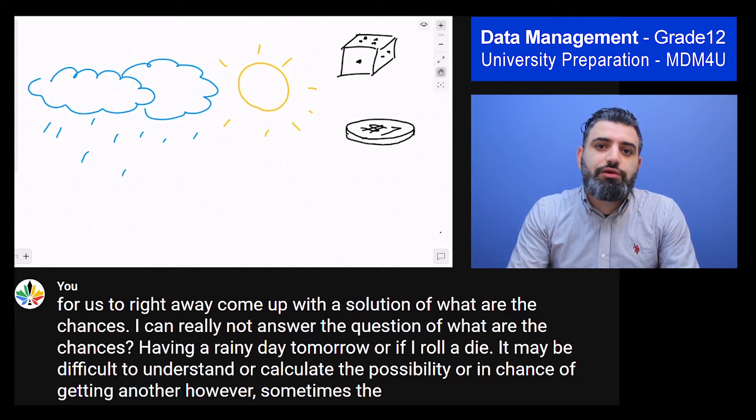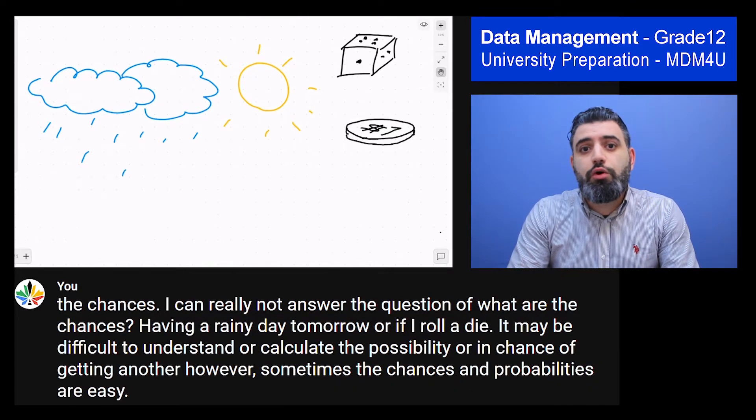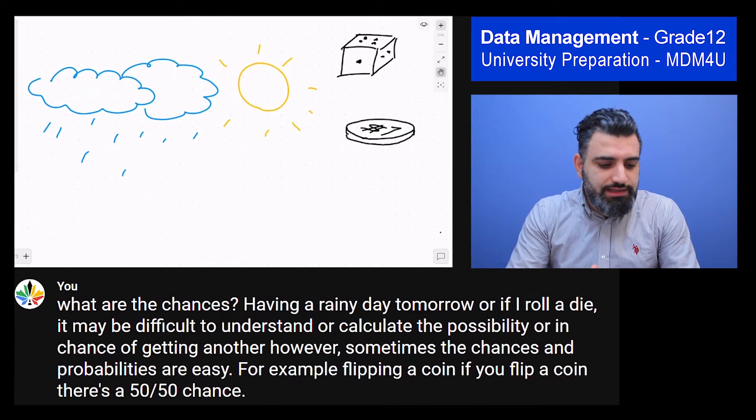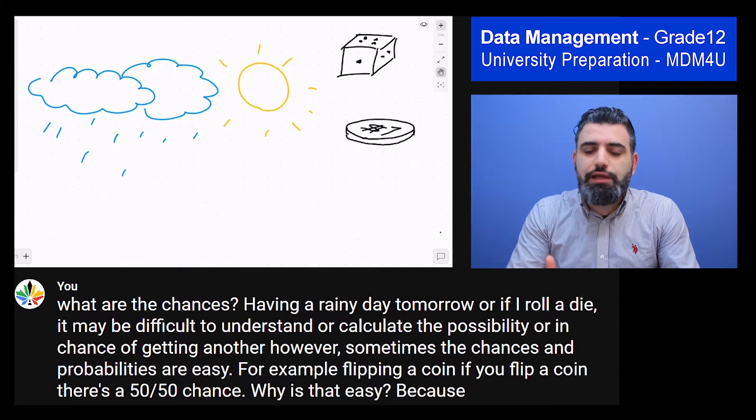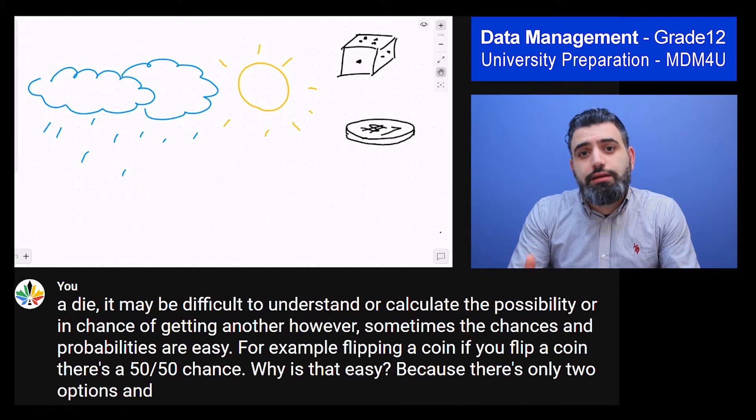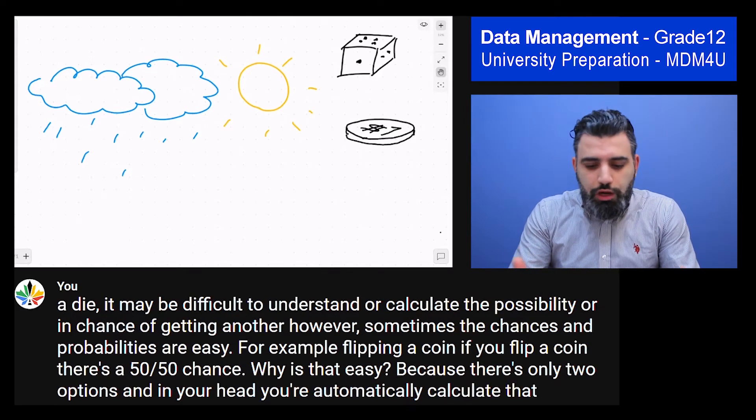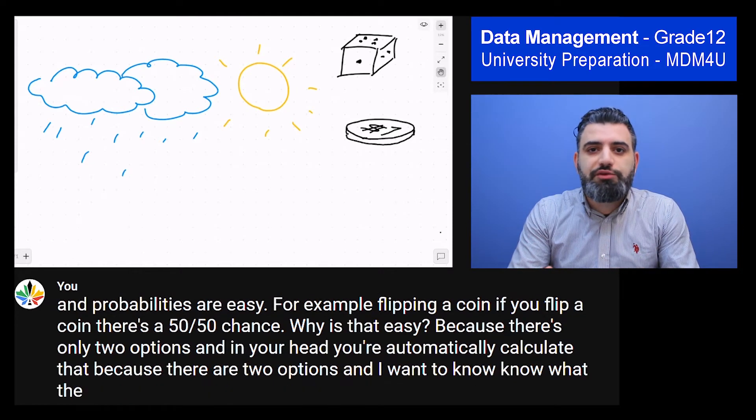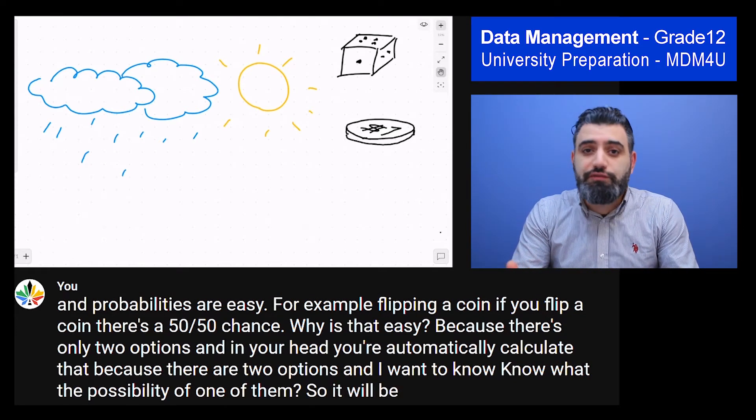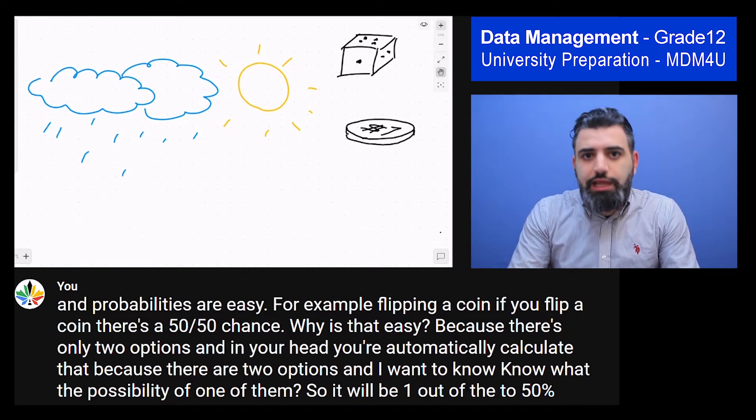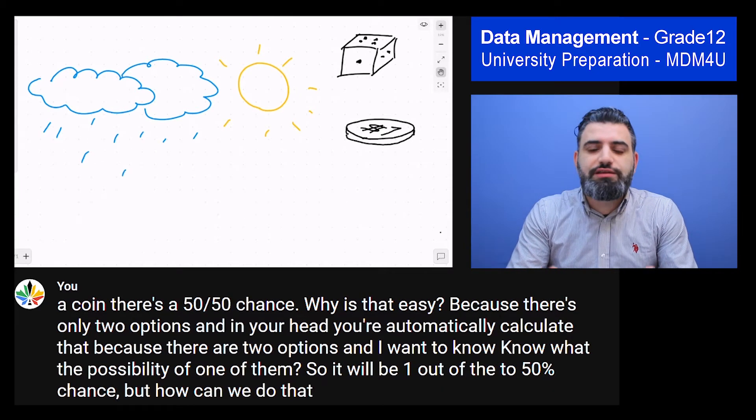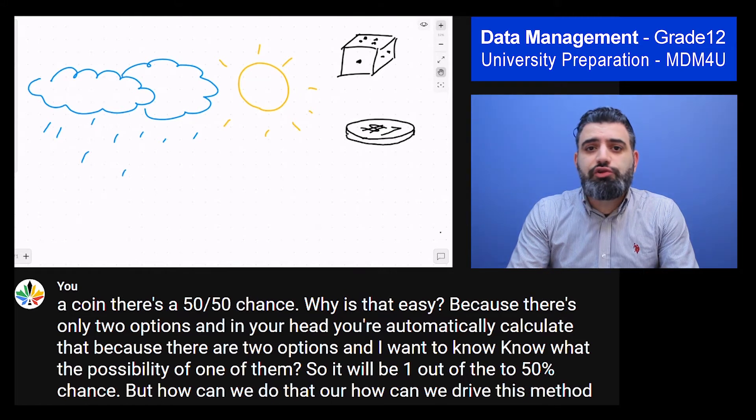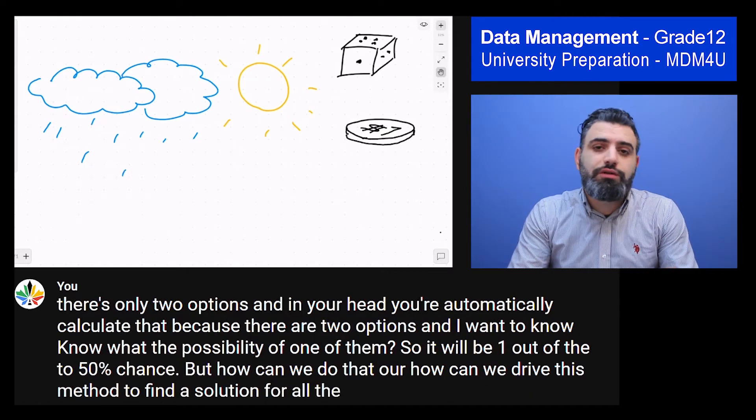However, sometimes the chances and probabilities are easy. For example, flipping a coin. If you flip a coin, there's a 50-50 chance. Why is that easy? Because there's only two options. And in your head, you automatically calculate that because there are two options, and I want to know the possibility of one of them. So it would be one out of the two or 50% chance. But how can we derive this method to find a solution for all the probabilities in the world?